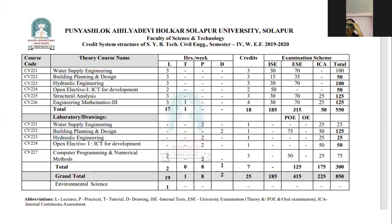CV221 is Water Supply Engineering, then Building Planning and Design, then Hydraulic Engineering, then Open Elective One — under that ICT for Development — then Structural Analysis, and then Engineering Mathematics Three.